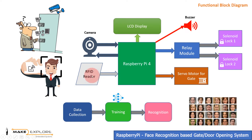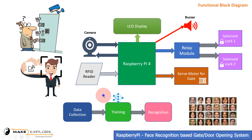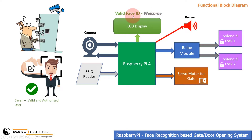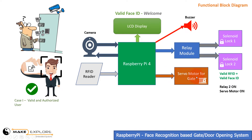RFIDs will be linked to particular users. Their names will be linked with their face IDs and RFIDs uniquely. Hence, users have to use only their personal RFIDs to unlock the gate or door. If the user is valid or authorized, the system detects it and shows its status on the LCD screen. Subsequently, it turns on the relay to the second level lock, and moves the servo motor to open the gate.